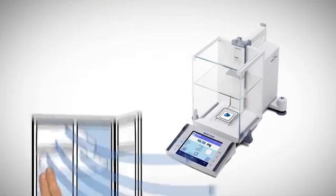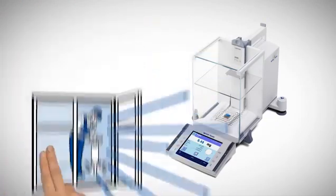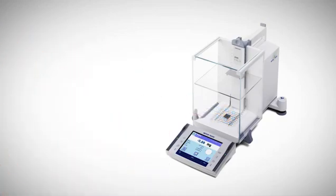USP 1251 provides practical recommendations for the qualification and operation of balances. Among others, it describes several environmental factors that can influence the performance of a balance. For example, air currents, temperature variations, vibrations, electrostatics and many more.